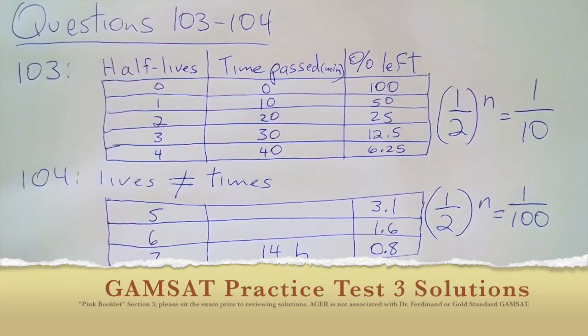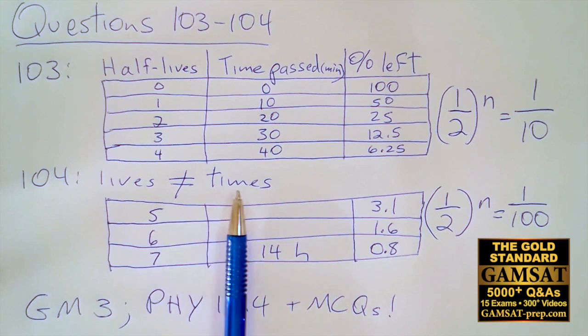Questions 103 and 104. The passage tells us about half-lives and half-times. They're not the same thing, but it doesn't matter because we calculate them in the same way. I personally wouldn't solve the problem by making tables, but I understand that for some people it's easier to visualize. I would use the standard equation which I put on the right side.